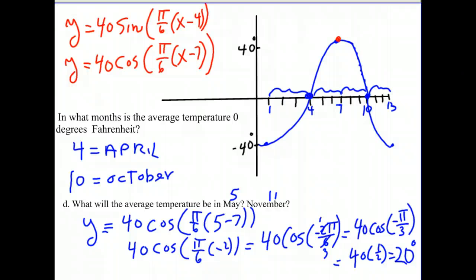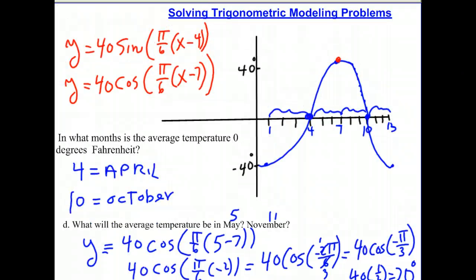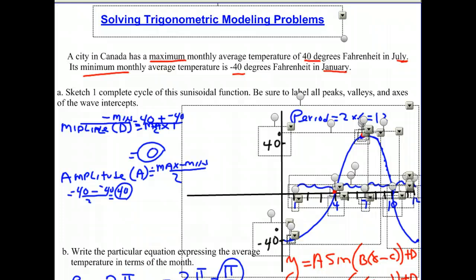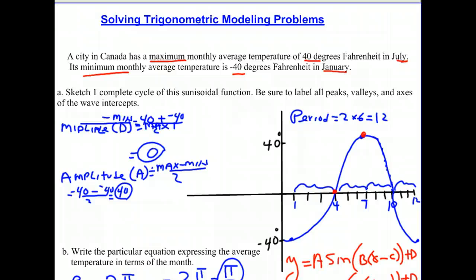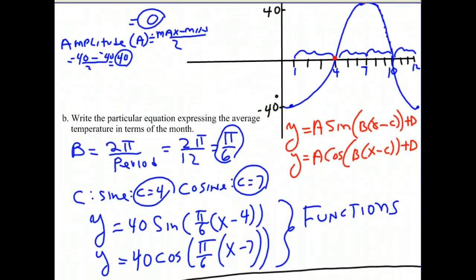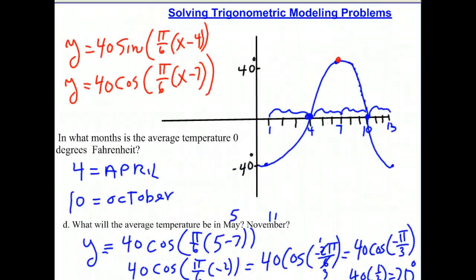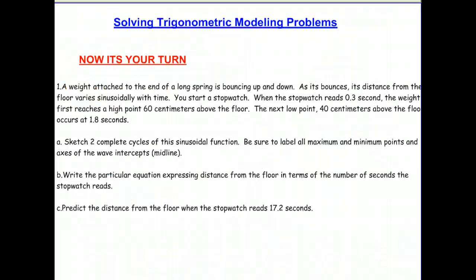We were given a word problem, and we modeled it by finding a function that models the data. Then we answered prediction questions about when temperature is zero degrees and what the average temperature will be in specific months. That is the purpose of modeling problems. Now pause this and see if you can solve the next problem in the same way.